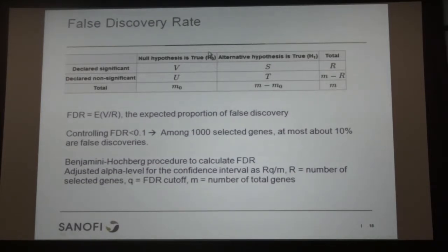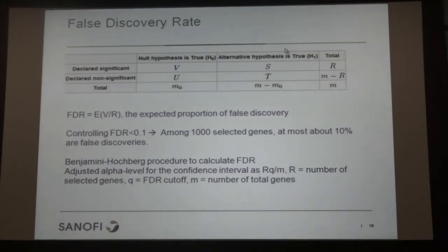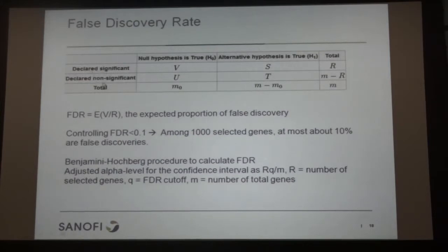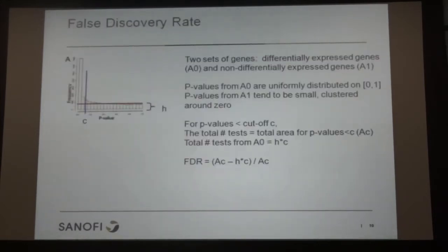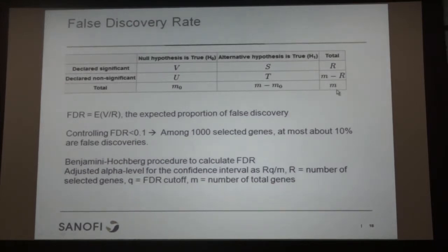A brief introduction on false discovery rate: we assume genes fall into two sets — H0, where there's no group difference in expression between healthy and diseased people, and H1, where there is a difference. We don't know the truth, so we need to estimate. We declare R genes as significant. The false discovery rate controls V divided by R — the expected proportion of false discoveries among declared significant genes.